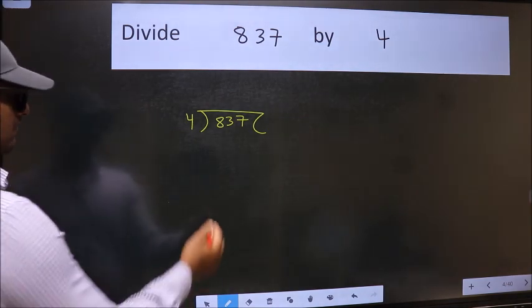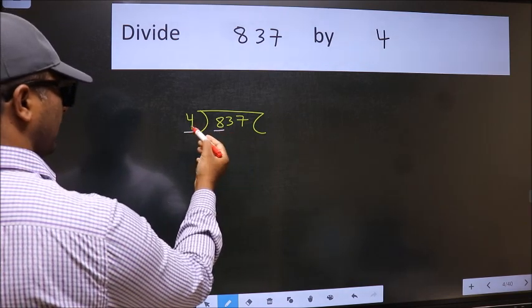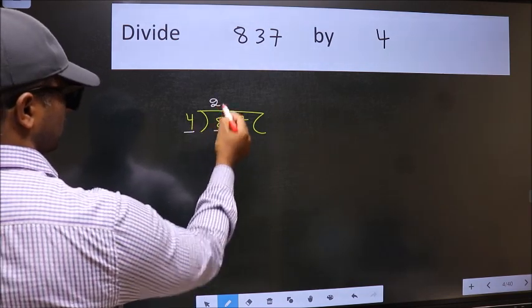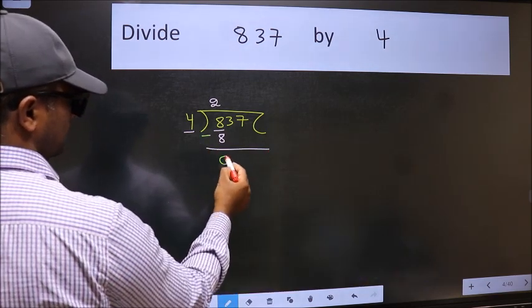Next. Here we have 8 and here 4. When do we get 8 in 4 table? 4 twos, 8. Now we should subtract. We get 0.